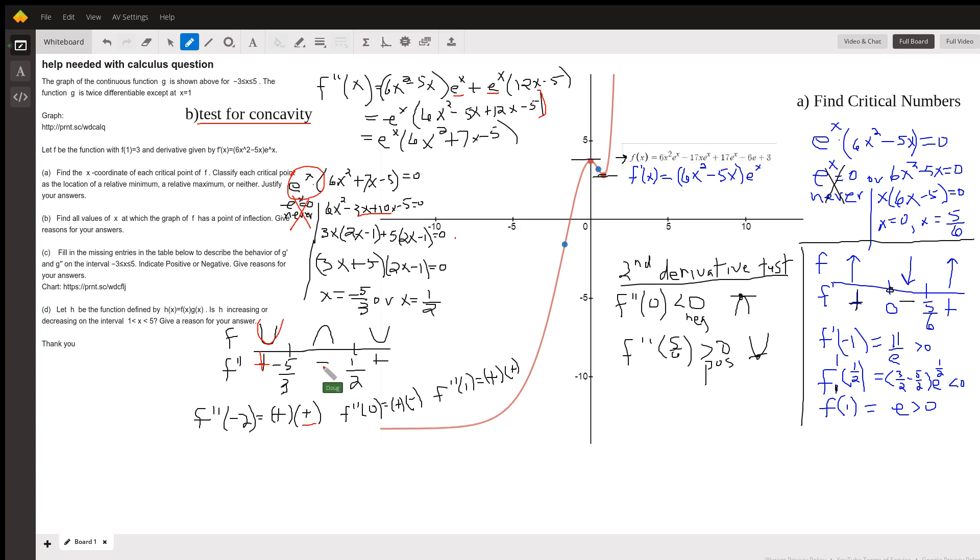Between negative 5/3 and 1/2, we're negative. Think of a frown. And to the right of 1/2, like f double prime of 1 is positive. So we've got smiley face concave up.